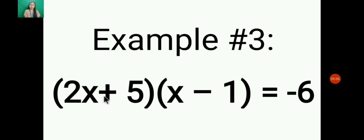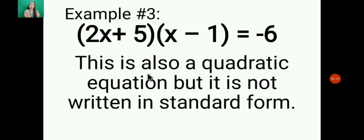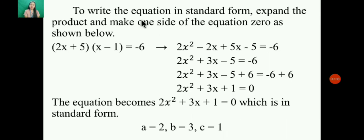Example 3: (2x + 5)(x - 1) = -6. Is that a quadratic equation? This is also a quadratic equation, but it is not written in standard form. To write the equation in standard form, expand the product using the FOIL method and make one side of the equation 0.